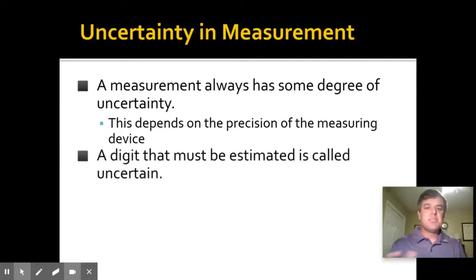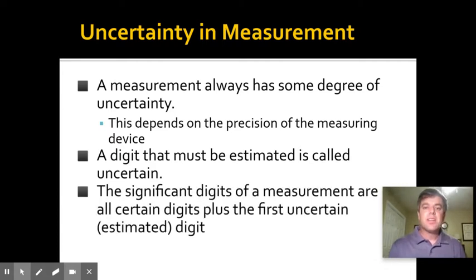There's a digit that is estimated when taking measurements that's considered to be the uncertain digit. Significant digits or significant figures are all of the digits that we are certain of plus the first digit that we have to estimate. For instance, if you're using a ruler, you have to kind of make a judgment at some point about exactly what that last digit is.